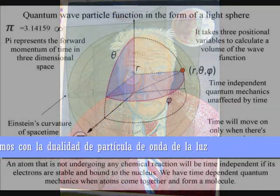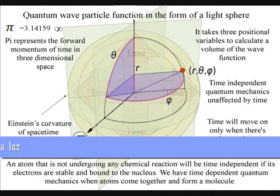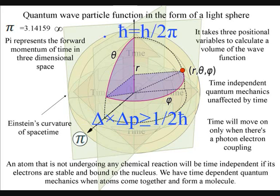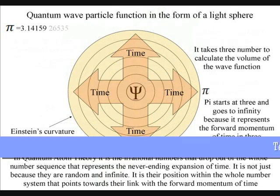We have Einstein's curvature of spacetime because of the spherical shape of the quantum wave-particle function. This is why we have pi in the equations, representing the shape of the wave function in three-dimensional spacetime.